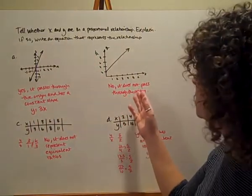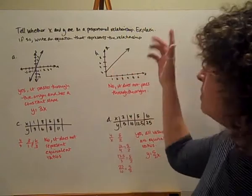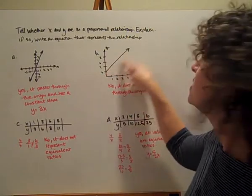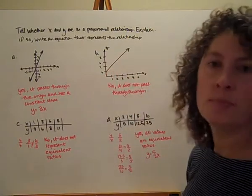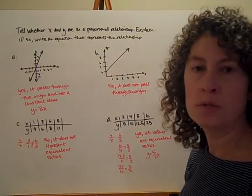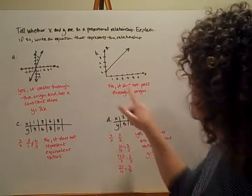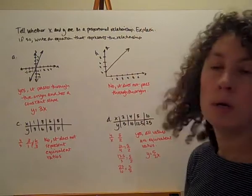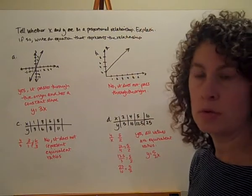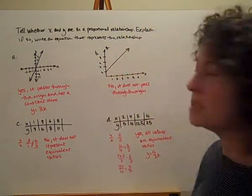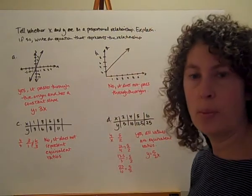Let's look at this second graph. Immediately I see that it's a straight line, but it doesn't pass through the origin, so it's not proportional. No — because it doesn't pass through the origin. That's a pretty easy one to check for proportional.